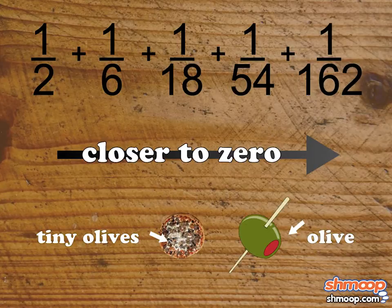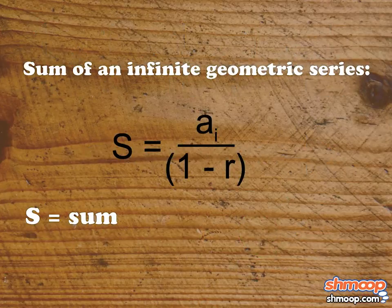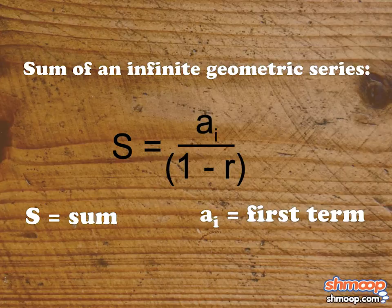Okay, so let's find that total for Pepe. The formula for the sum of an infinite geometric series equals the first term divided by the quantity one minus the common ratio.